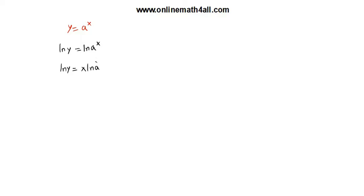I already have told you that a is a constant. When a is a constant, logarithm of a will also be a constant. So this ln a is a constant, and this constant is multiplied by the variable x. Now we can find the derivative on both sides with respect to x.